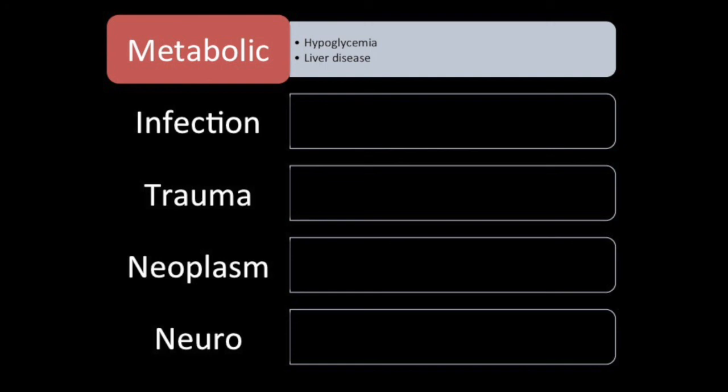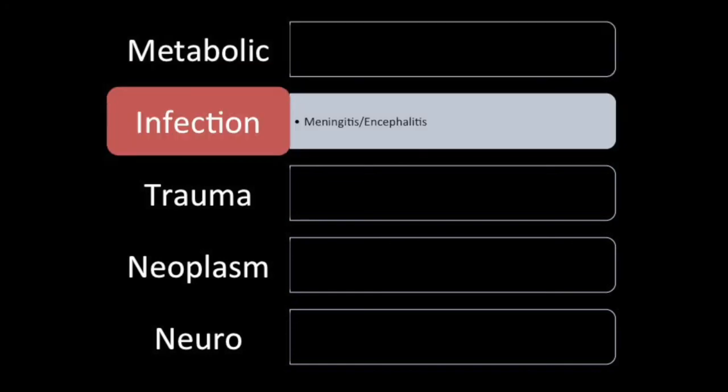So what are some stroke mimics? There are a couple of things that can look like a stroke, and we don't want to do interventions that could be harmful if it's actually something else. Hypoglycemia — low sugar — can mimic stroke. Liver disease: if your liver's not functioning, there are toxins that can build up, just like with the kidneys, that can mimic stroke symptoms — this is where your history comes into play. Infection — a person can have an infection of their brain or spinal cord that obviously causes problems.